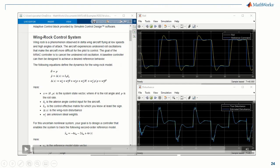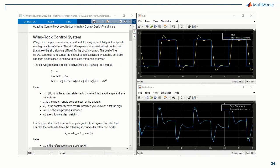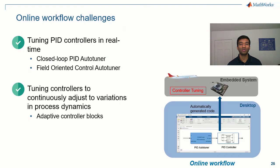Now that you've seen how to use the model reference adaptive controller block in simulation, you can generate code from this block and deploy it on an embedded system to see how it works with the real physical plant. That's how you would use adaptive controller blocks from Simulink Control Design to continuously adjust to variations in process dynamics.